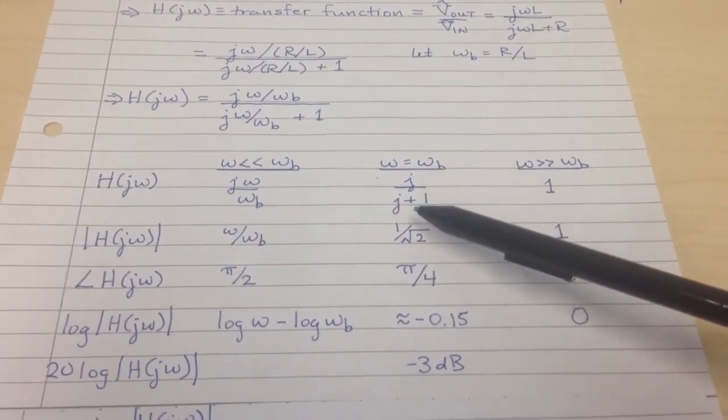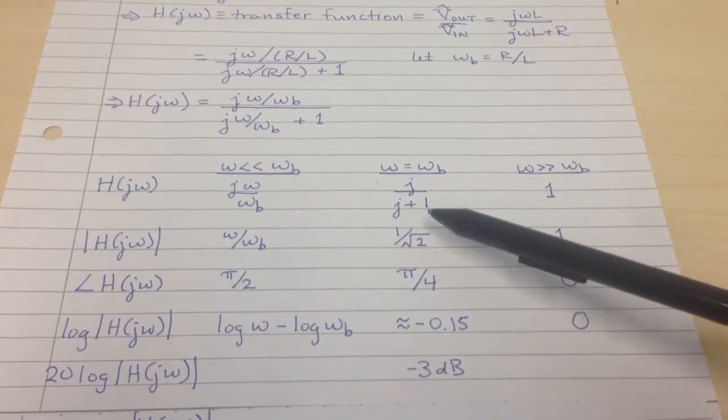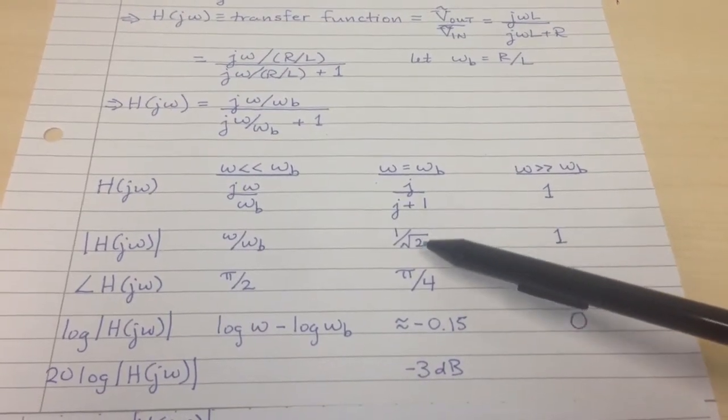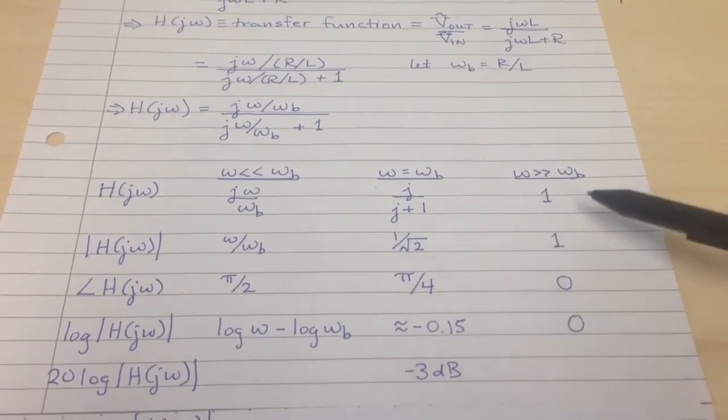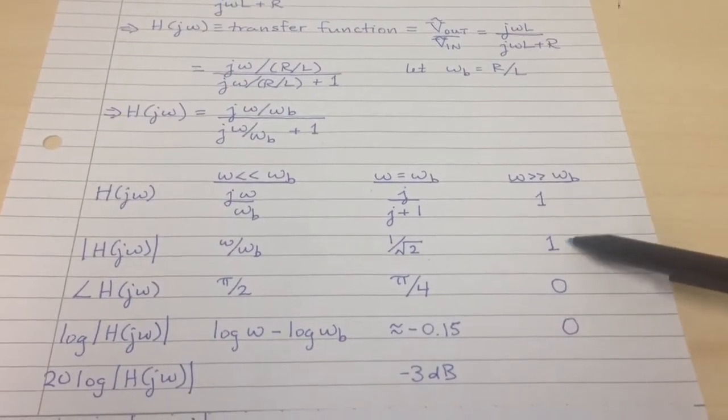The magnitude of j is 1. The magnitude of j plus 1 is just the hypotenuse of a 1, 1 right triangle, so it's square root of 2. So it's 1 over square root of 2. And obviously, the magnitude of 1 is 1.